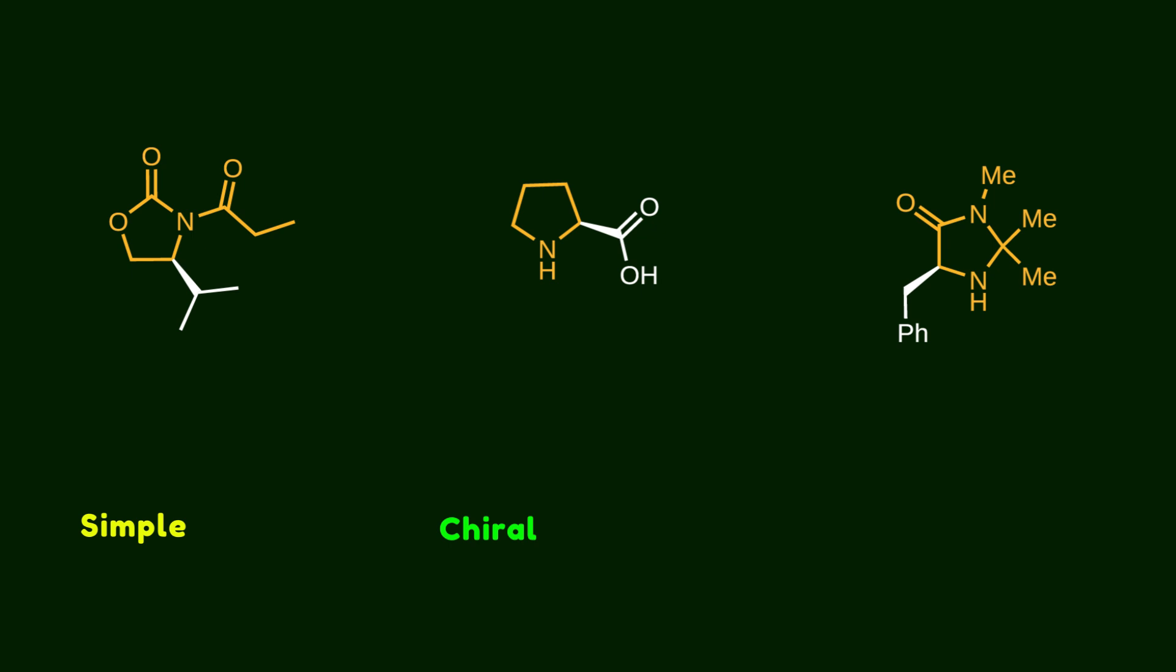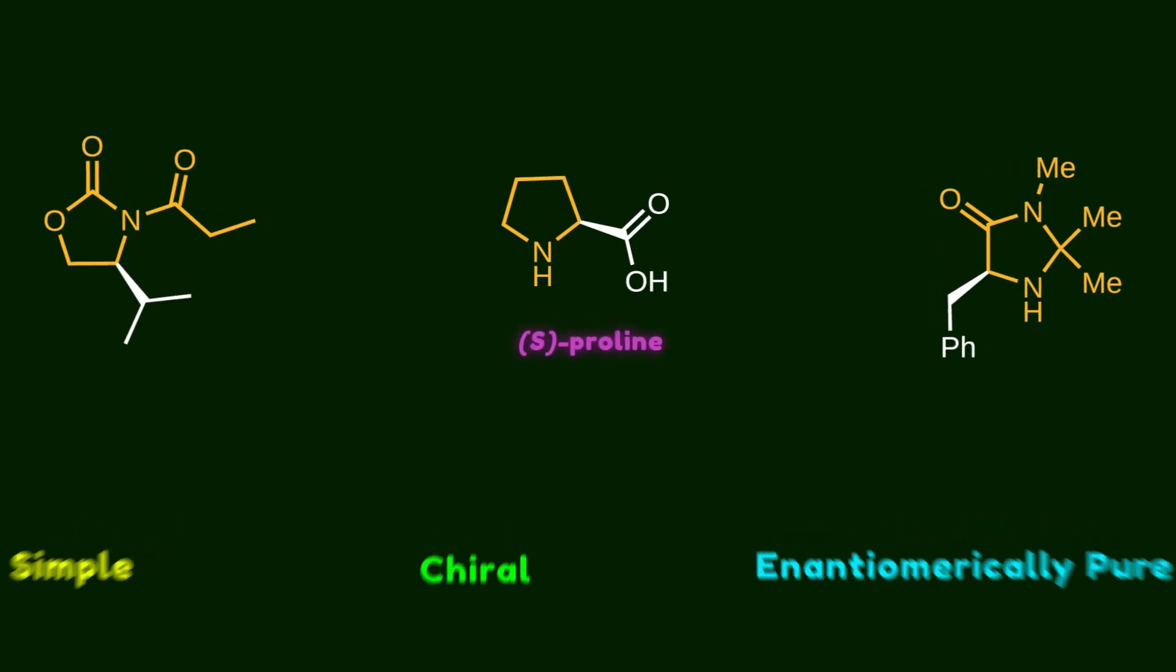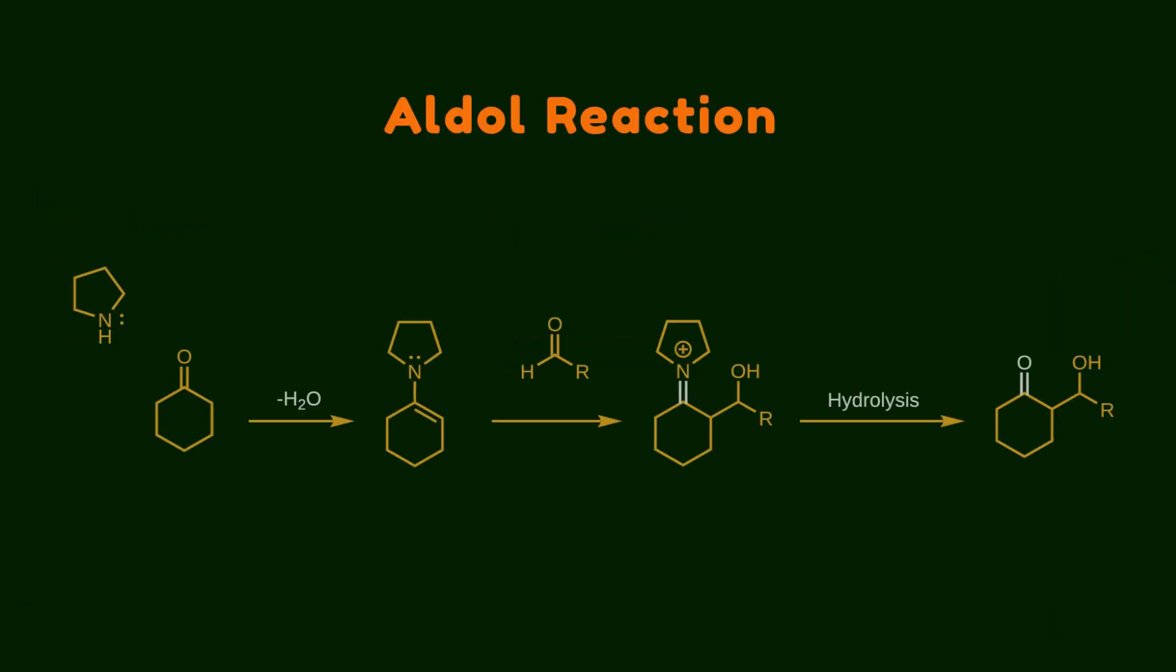Simple, chiral, and enantiomerically pure organic molecules can also react with substrates, providing a chiral environment and at the same time activating them for enantioselective attack. In this video, I'm breaking down the enantioselective aldol reaction catalyzed by proline. When it comes to the aldol reaction, using secondary amines is a pretty effective approach.